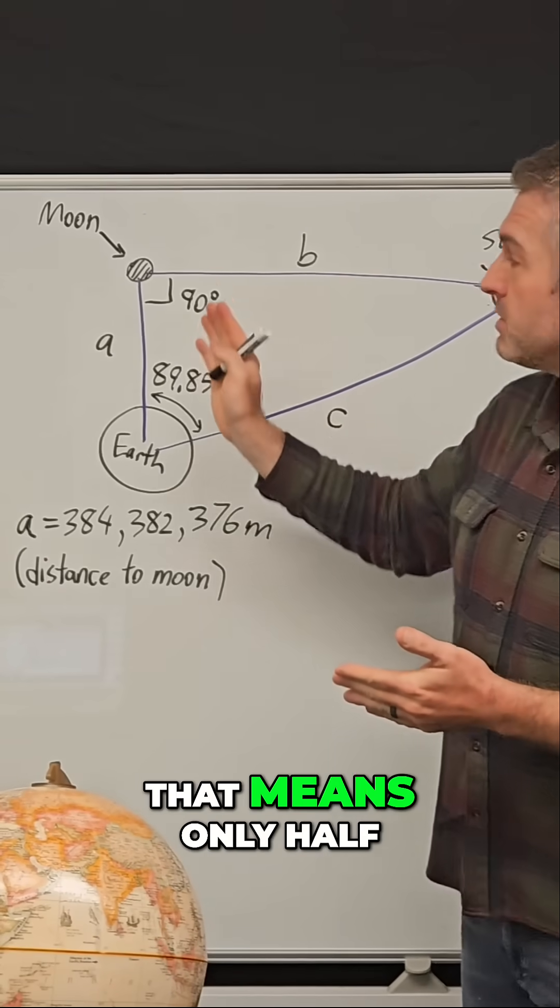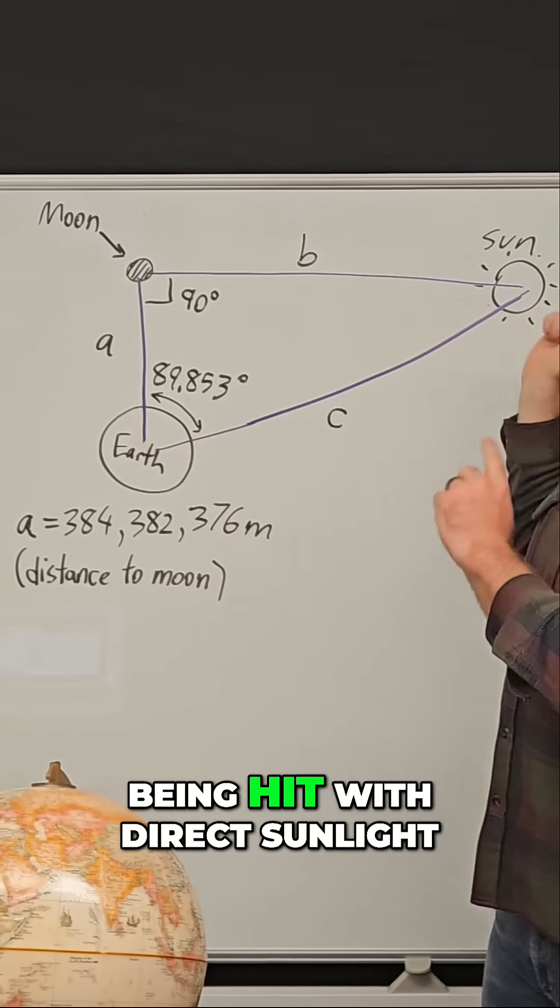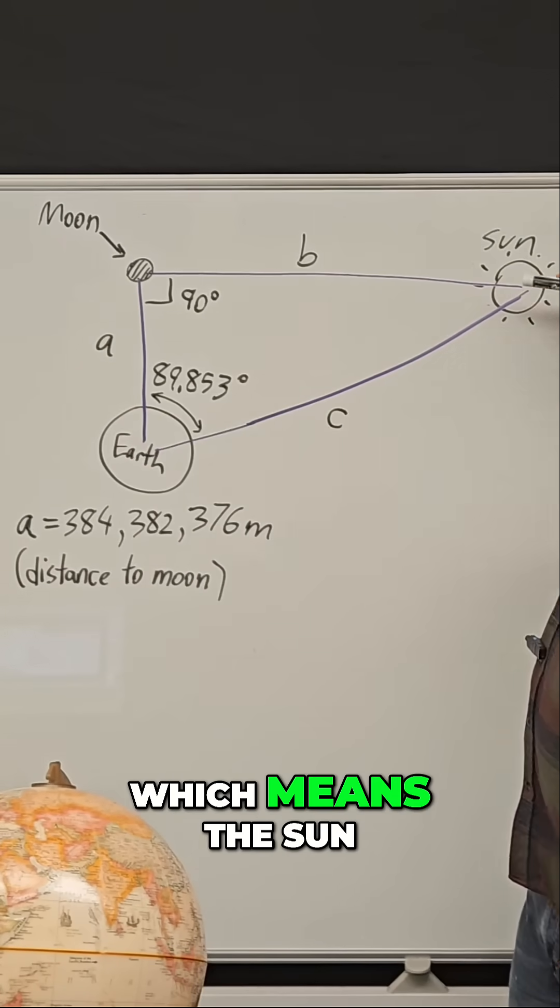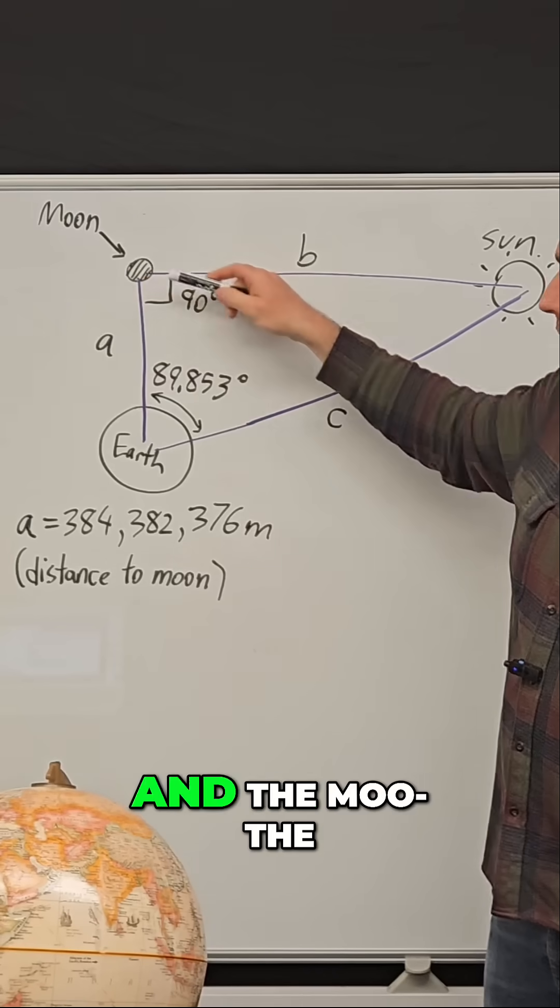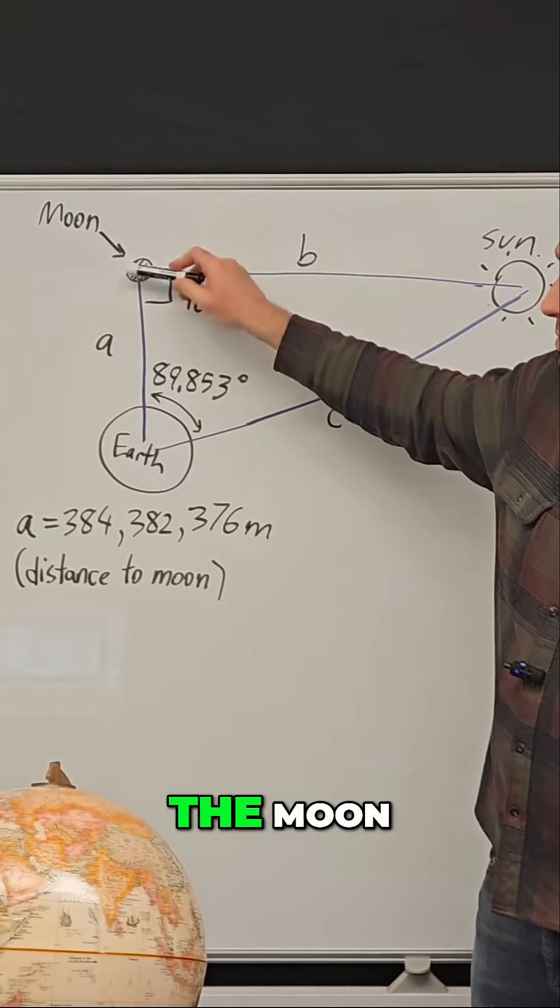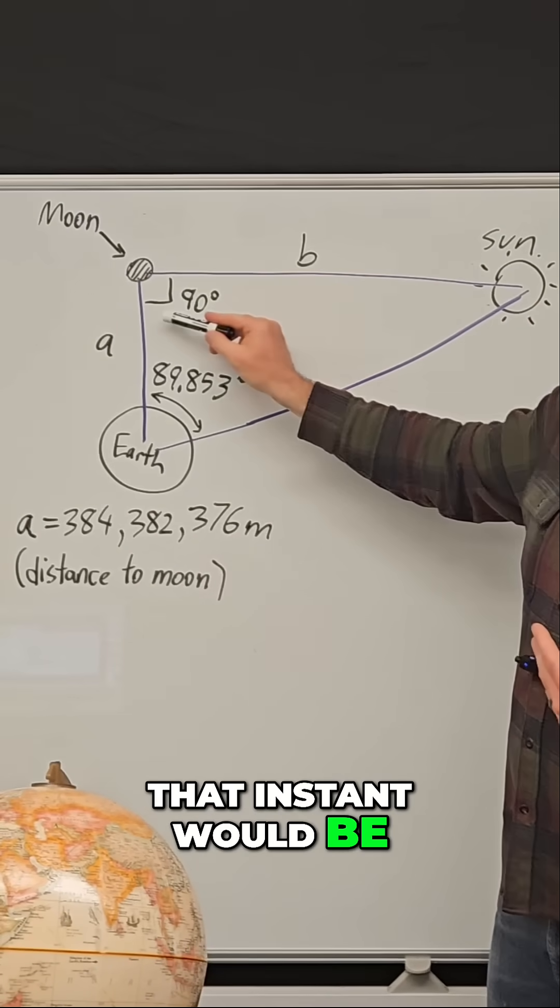And we know if the moon is half full, that means only half of its face is being hit with direct sunlight, which means the sun should be shining perfectly at the moon and the angle between the earth, the moon, and the sun at that instant would be 90 degrees.